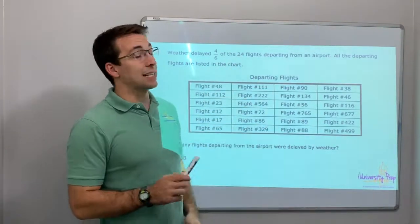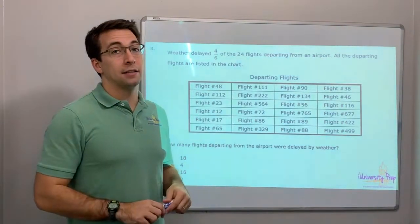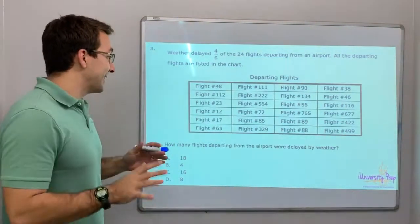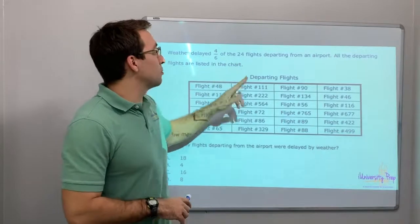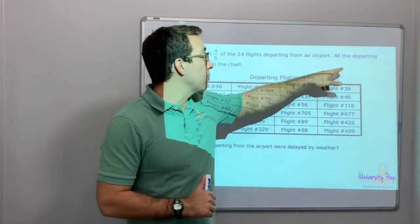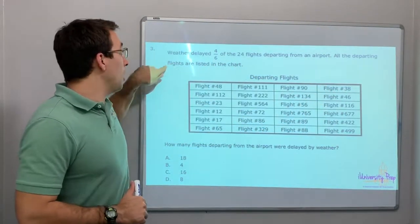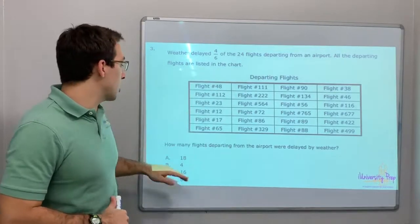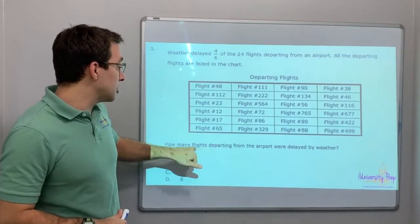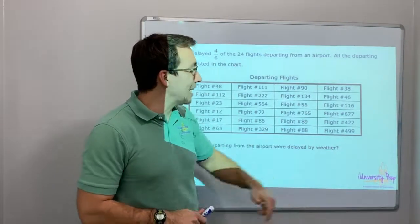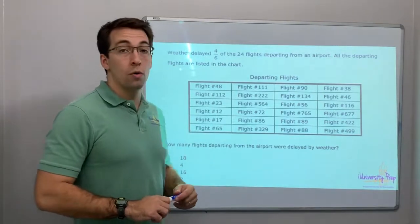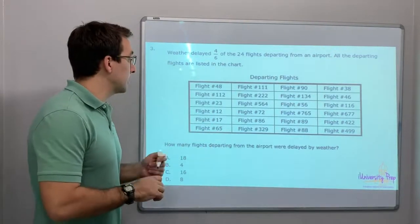Weather delayed four-sixths of 24 flights. Four-sixths of 24 flights departing from an airport. All of the departing flights are listed in the chart. How many flights departing from the airport were delayed? Okay, so let's look at this.